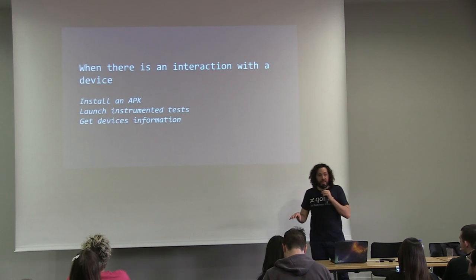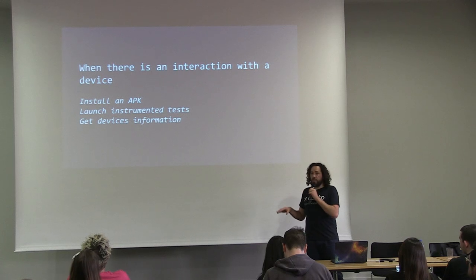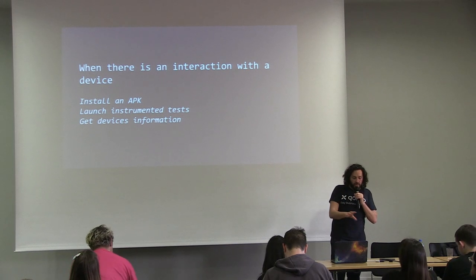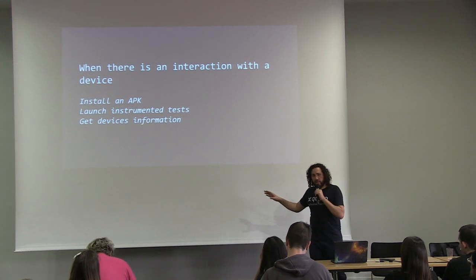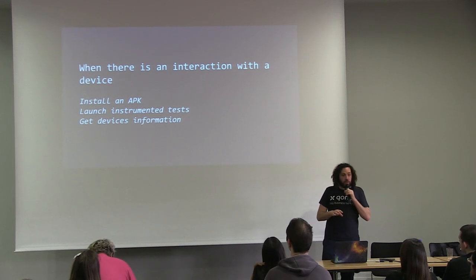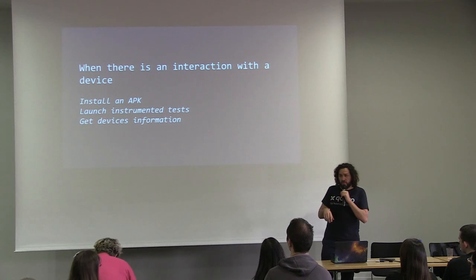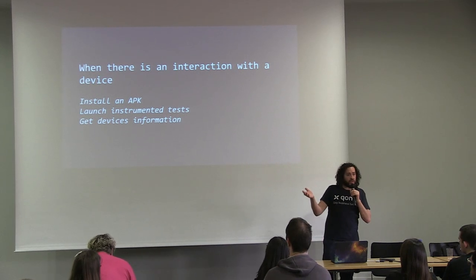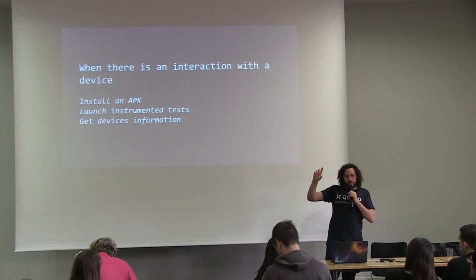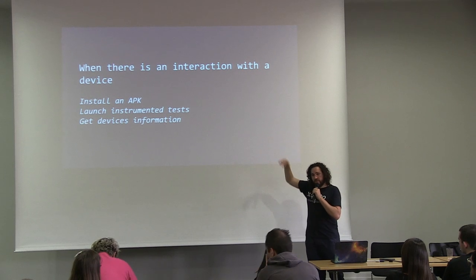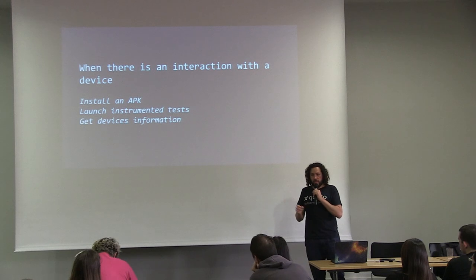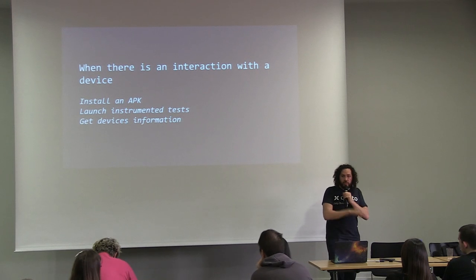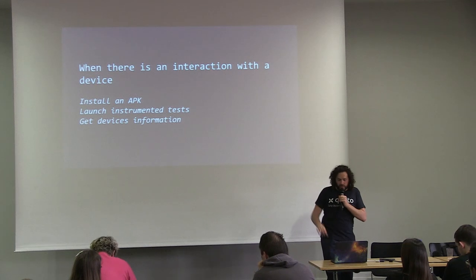The Android Gradle Plugin uses DDMLIB every time it has an interaction with a device — when installing an APK, when launching instrumented tests, when getting device information, and when starting Instant Run. You see that pop-up appearing because it's fetching information from the device — the Android version, for example. So Gradle Plugin uses DDMLIB on specific use cases.